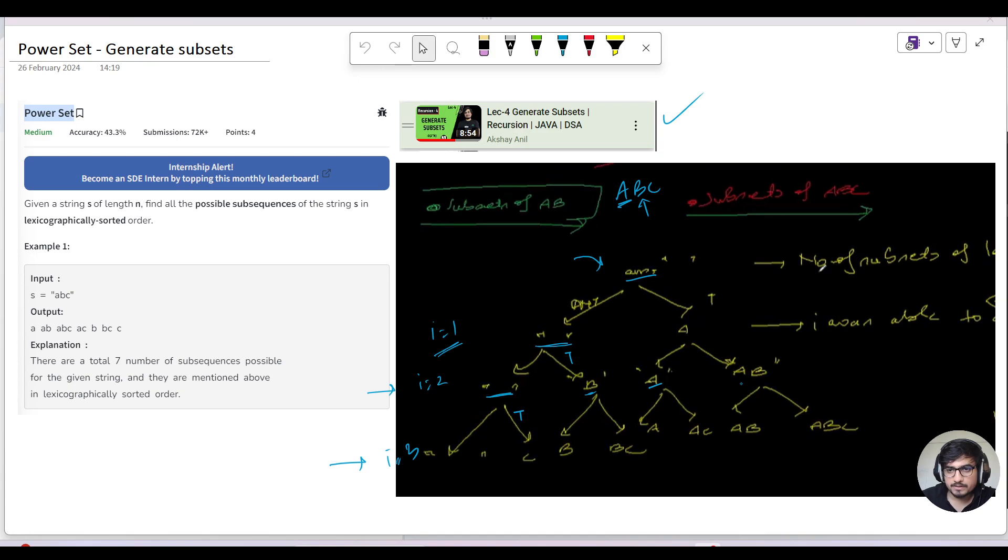Similarly for 'ab', if you don't take the third character it remains 'ab', if you take it becomes 'abc'. Now if you see, all the particular answers or the group of subsets is residing at level 3. This is our answer.